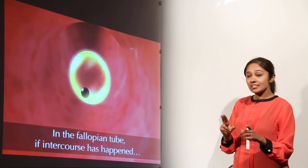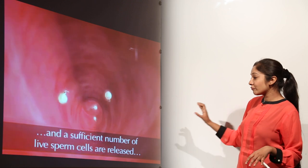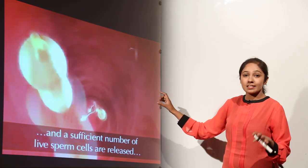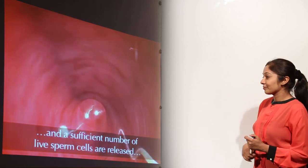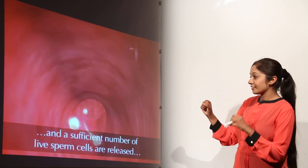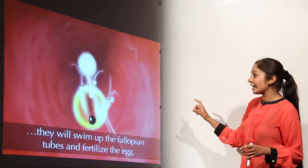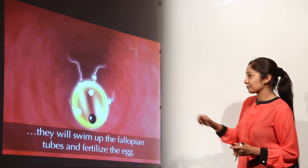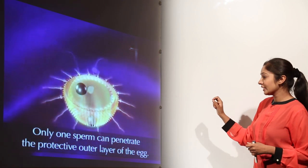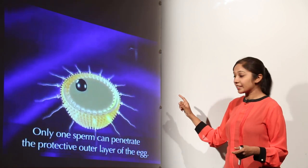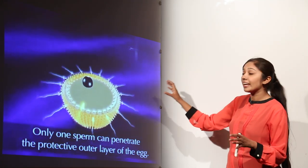In the fallopian tube, if intercourse has occurred, sperm fuses with the egg. A sufficient number of live sperm are released, but only one is going to penetrate. Millions of sperm cells swim up the fallopian tubes to fertilize the egg.